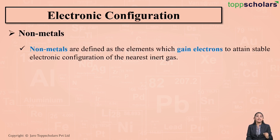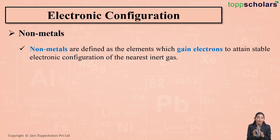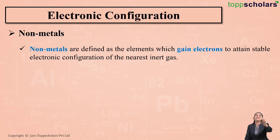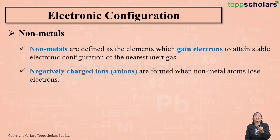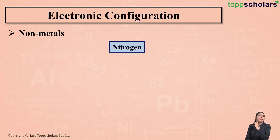What about non-metals? Non-metals are the elements which gain electrons — they accept electrons — in order to attain the stable electronic configuration of the nearest inert gas. In order to become stable, non-metals gain electrons. When non-metals accept electrons, they form negatively charged ions, that is anions.